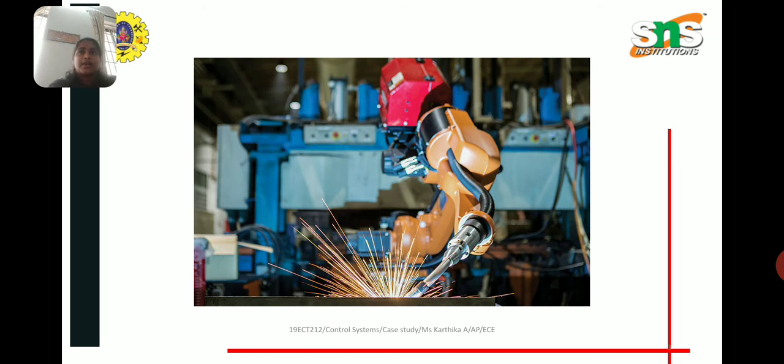We also have some real-time applications for industrial robots. The industrial robot system usually consists of four parts: first is the robot body, second is the server system, third is the control system, and fourth is the sensor. Among them, the control system is equivalent to the brain of industrial robots, whose task is to drive the robot body to complete the specific task according to the user's instructions. That's it, thank you.